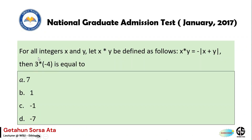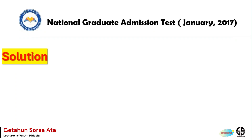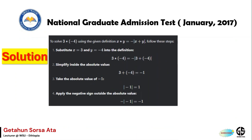For all integers x and y, let x★y be defined as follows: x★y is equal to minus the absolute value of x plus y. Then 3★(−4) is equal to: a) 7, b) 1, c) −1, d) −7. Let us solve this.